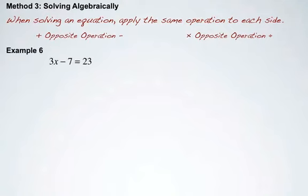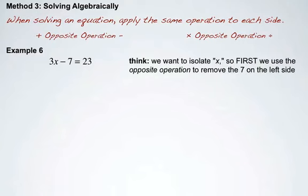Example 6. 3x subtract 7 is 23. So we want to isolate x, so first we're going to deal with this separate number, which is the subtract 7. So we're going to do that by adding 7 to both sides.